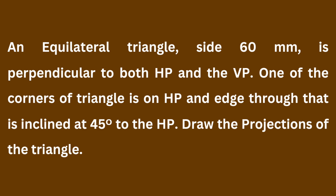We are given an equilateral triangle with side 60 mm that is perpendicular to both HP and VP. Since it is perpendicular to both HP and VP, you will not be able to see the actual shape of the triangle in any of the principal views — the front view and top view. So for this, we will have to project its view on the profile plane, which is the side view. We will draw the side view first.